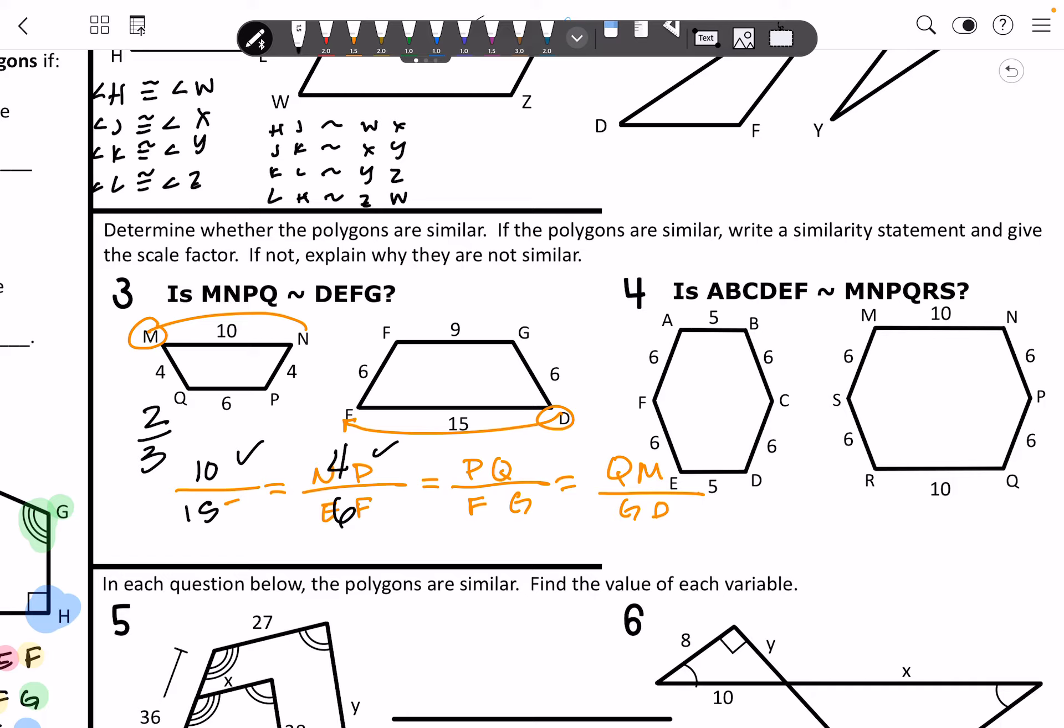So PQ over FG gets you 6 over 9. That also simplifies to 2 over 3. And then right here, we've got the same thing again. We've got QM and GD. That gets you 4 over 6. It's also the same thing. So yes, it is similar. And your K value is 2 thirds.